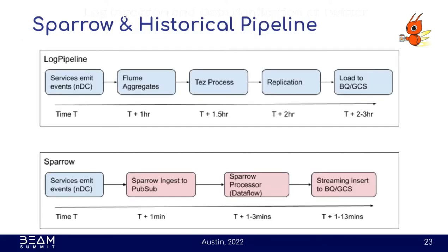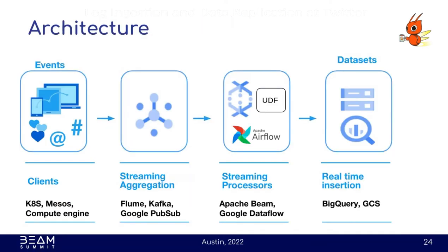Here's a comparison of Sparrow with our historical pipeline. Previously, ingesting data to BigQuery for very large datasets — tens of terabytes per hour — could take two to three hours or even longer. With the new pipeline, it takes minutes. For smaller datasets around 100 megabytes or even gigabytes, it may be able to achieve second-level latency.